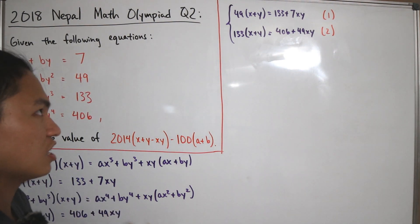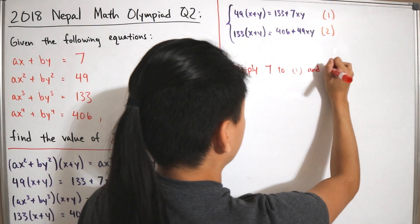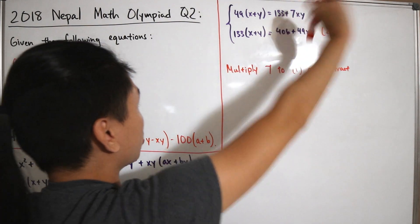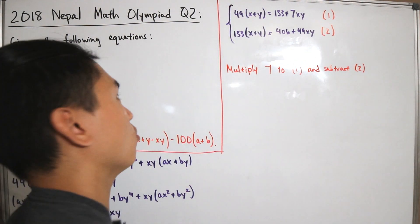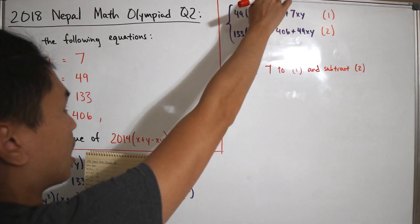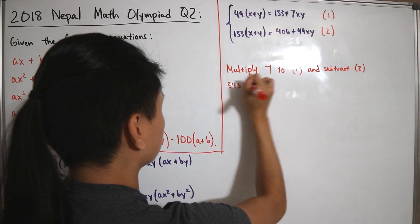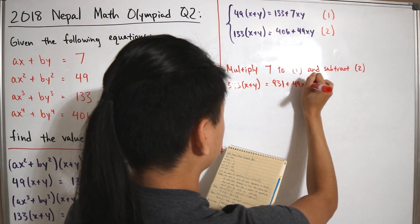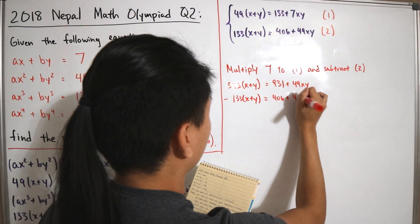To solve the system, multiply Equation 1 by 7, giving 343(x + y) = 931 + 49xy. Then subtract Equation 2 — which is 133(x + y) = 406 + 49xy — from this. The 49xy terms cancel, leaving 210(x + y) = 525.